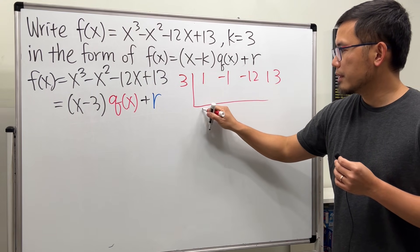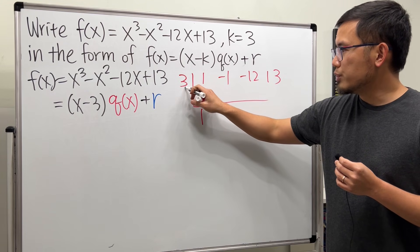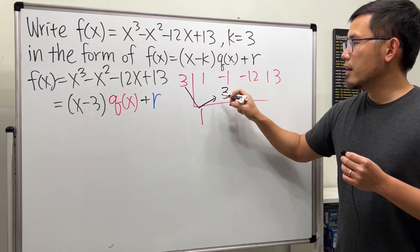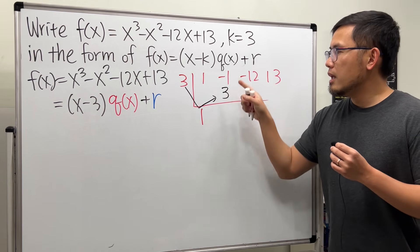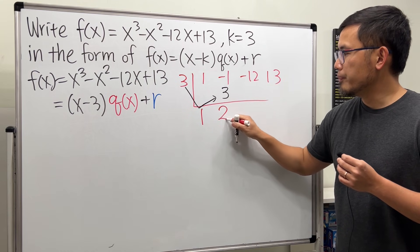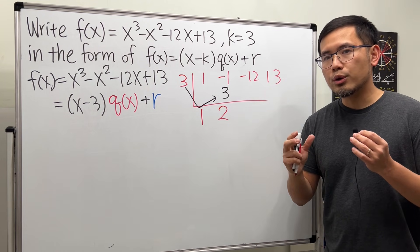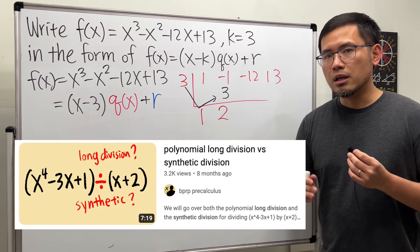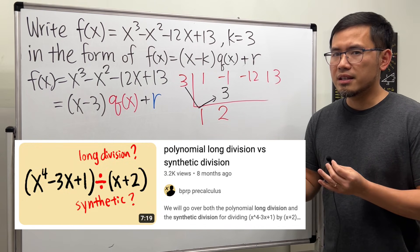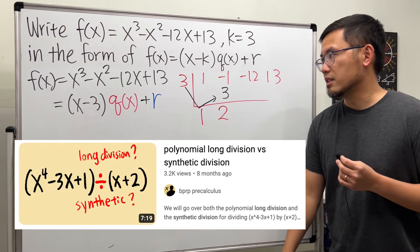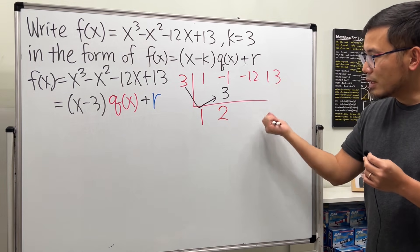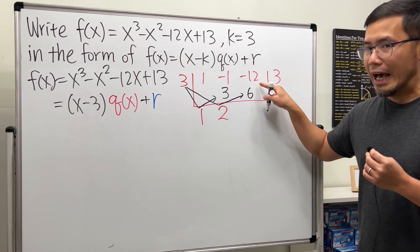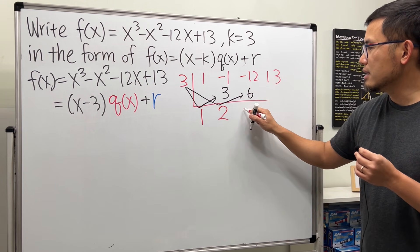Go ahead and put down a 1 right here, and here we go. You take this 3, multiply it by 1, which is 3, and you put it here. And then these two numbers, you are going to add them up. Negative 1 plus 3, we get 2. When we do the synthetic division, we are going to add these numbers. Unlike polynomial long division, we subtract. And if you want to see a video on comparing the polynomial long division and the synthetic division, I will have that in the description for your convenience. And then we just have to repeat the process. 3 times 2 is 6, and then put it here. And then we add them up. Negative 12 plus 6 is negative 6.